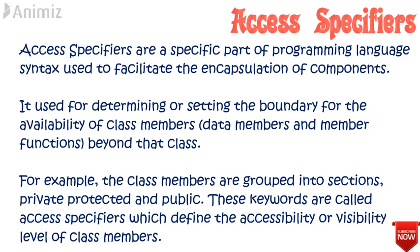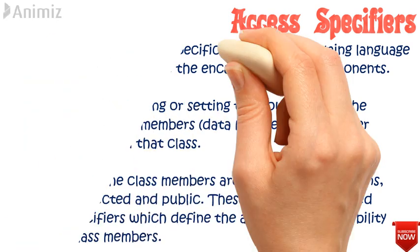Access specifiers are used for determining or setting the boundary for the availability of class members — that is, data members and member functions — beyond that particular class. The class members are grouped into sections like private, public, and protected. These keywords are called access specifiers, which define the accessibility or visibility level of class members.